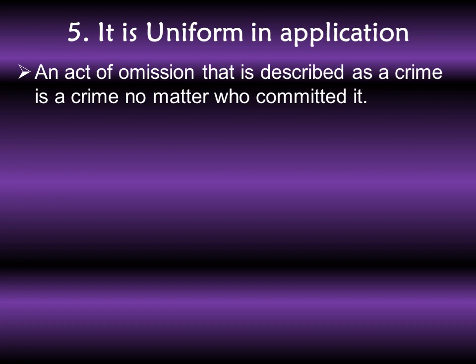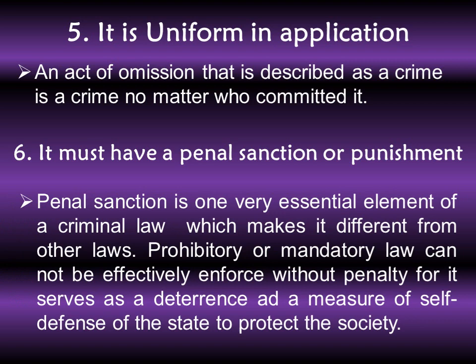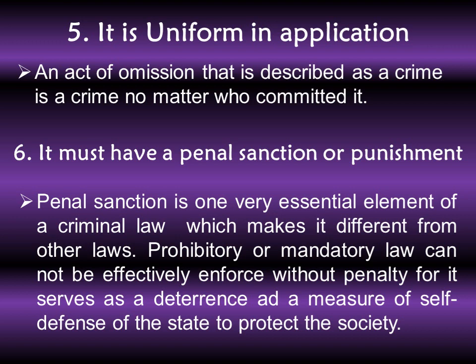The fifth characteristic is that criminal law must be uniform in application — all acts or omissions described as a crime is a crime no matter who committed it. And lastly, it must have a penal sanction. That is why we call our law the Revised Penal Code — from the word 'penal,' meaning penalty or punishment — because a law without penalty is not a criminal law. This law is a form of prohibitory and mandatory law, so for violations of its provisions there is a punishment appropriate with certain proportionality. For other details about exemptions to territoriality, refer to my lesson on criminal law proper already uploaded on YouTube. Thank you and see you on my next video. God bless and keep safe.